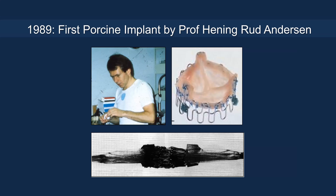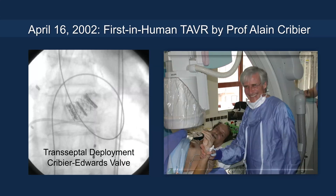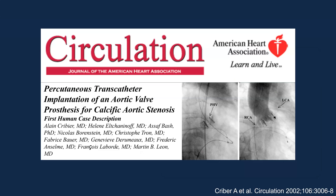For historical background, the first porcine implant of a transcatheter aortic valve was performed by Professor Anderson in 1989. On April 16, 2002, the first in-human procedure was done by Professor Alain Cribier via a transseptal approach on the Cribier-Edwards valve, and in fact the patient at the time had a bicuspid morphology. That case was subsequently published in Circulation.